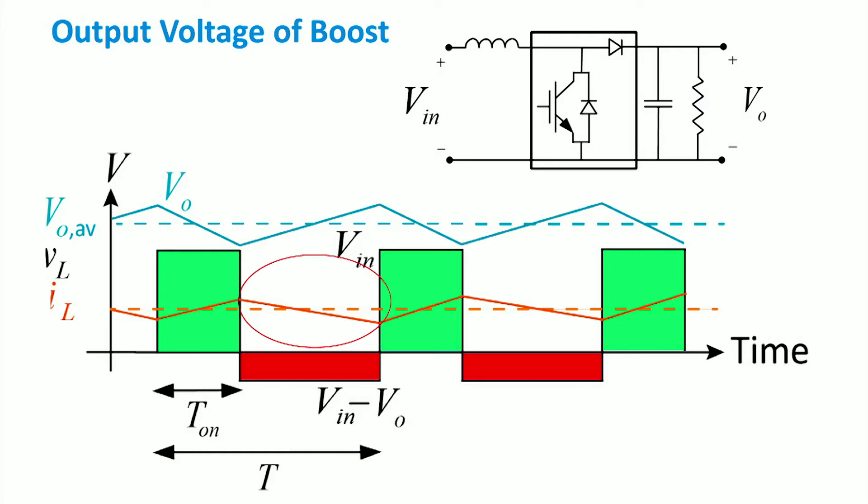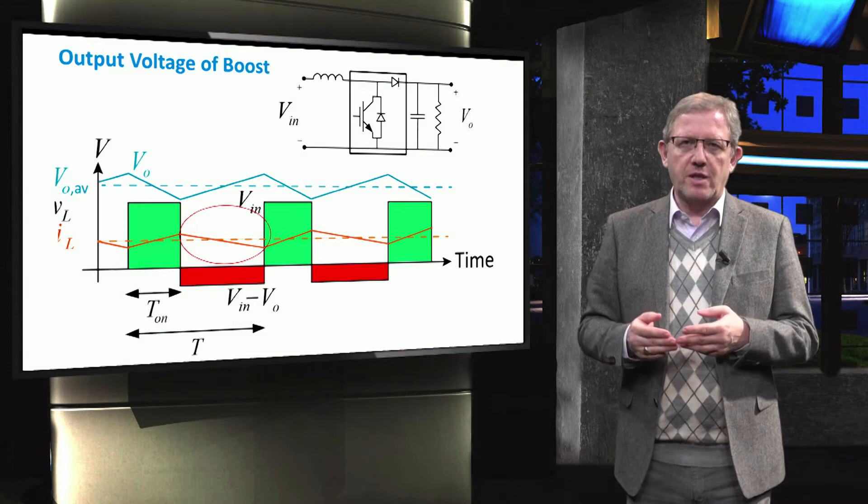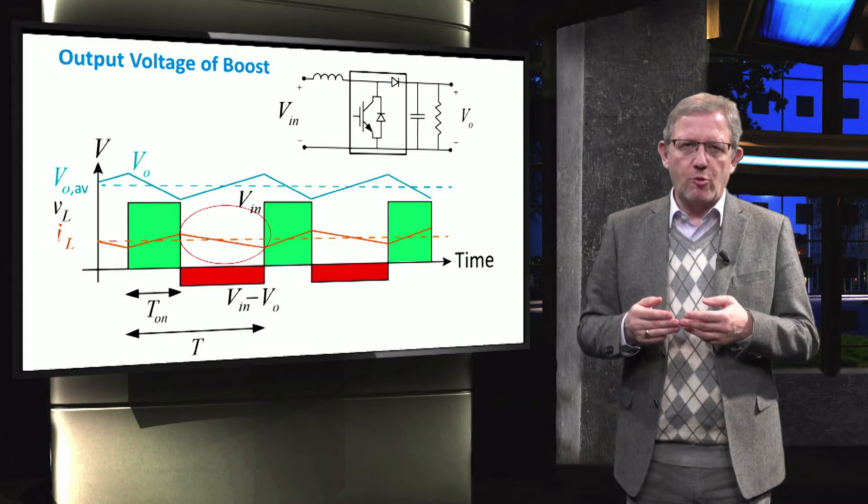Then the energy stored in the inductor is provided to the output during the off time of the switch, as it is shown by the red area. During this period, the capacitor is charged where the output voltage increases.